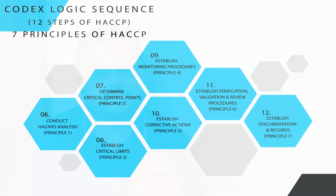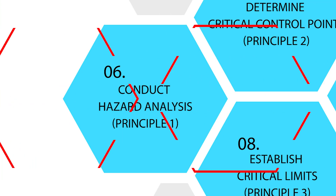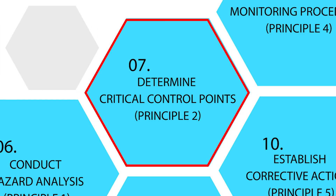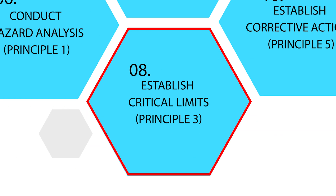Among the 12 steps, there are seven which are called the HACCP principles. These seven steps are mandatory — without properly conducting them, a HACCP system cannot exist. Interestingly, all other food safety management systems also require you to follow these seven principles. Principle one, after the five preparatory steps, is hazard analysis. Principle two is determining critical control points.